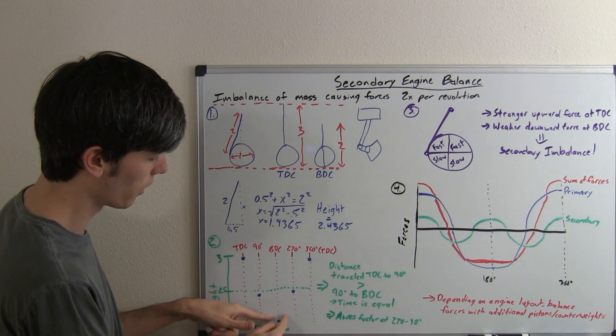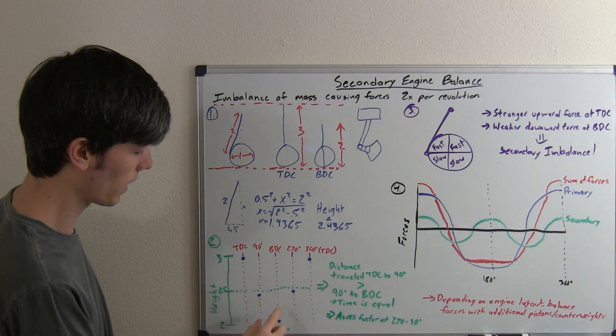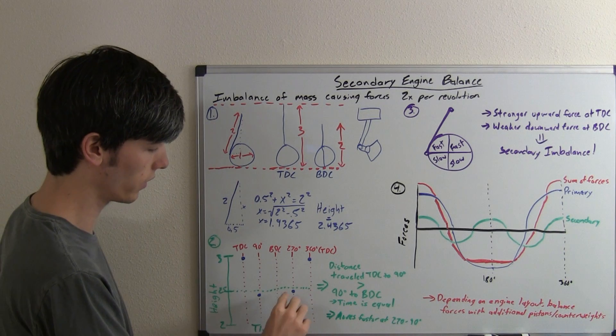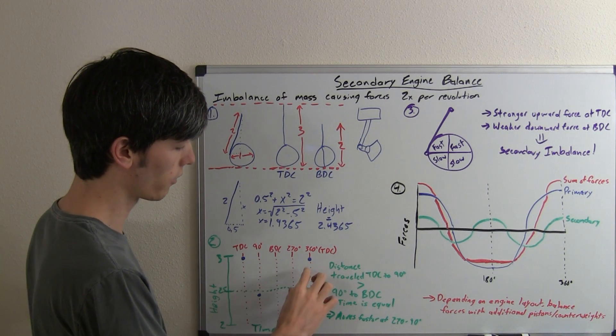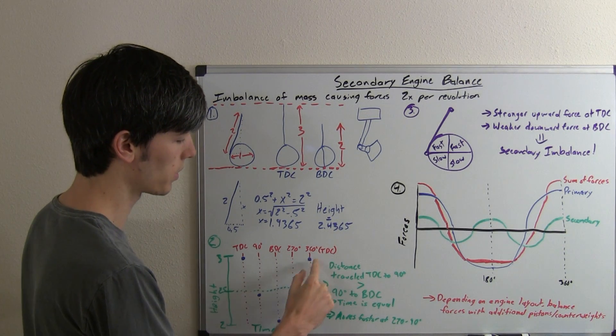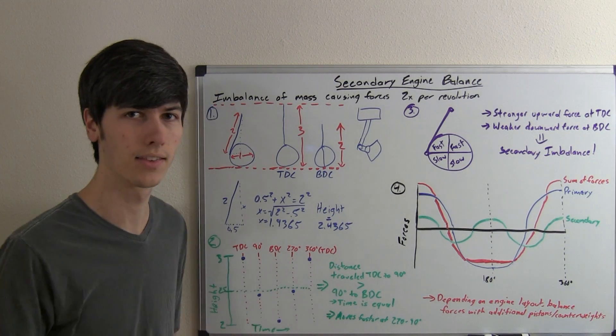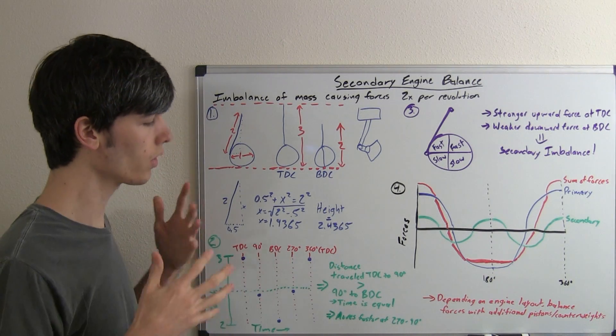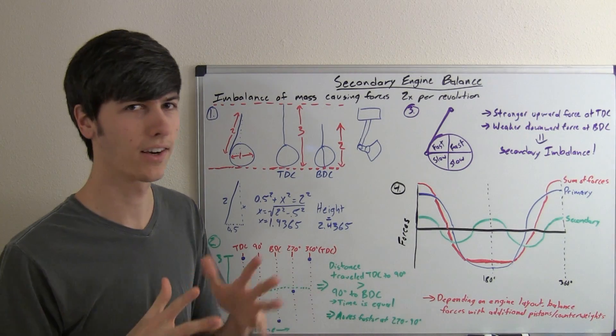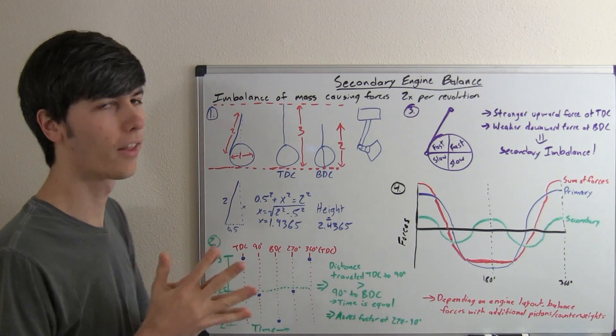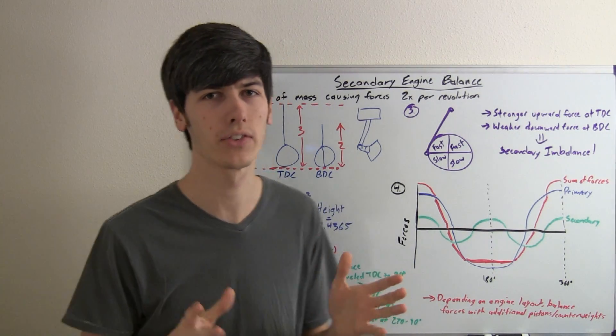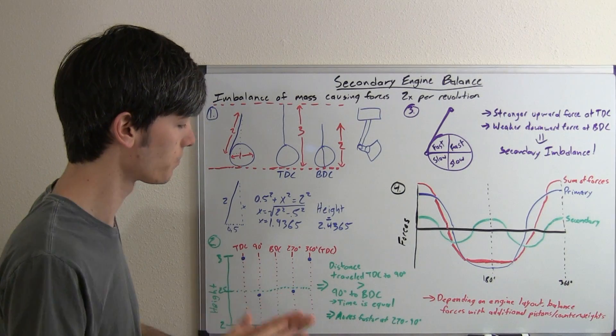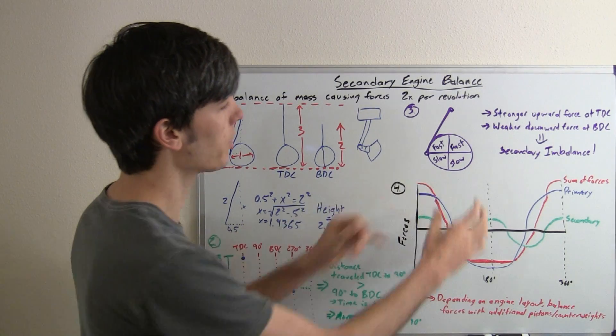And the same occurs on its way back up. So it travels a shorter distance in the same amount of time when it rotates to 270 degrees, and then from 270 all the way back up to top dead center, it travels a greater distance in the same amount of time. So what does that mean if the distance traveled is greater in the same amount of time? Well, that means that the piston is moving faster during that rotation.